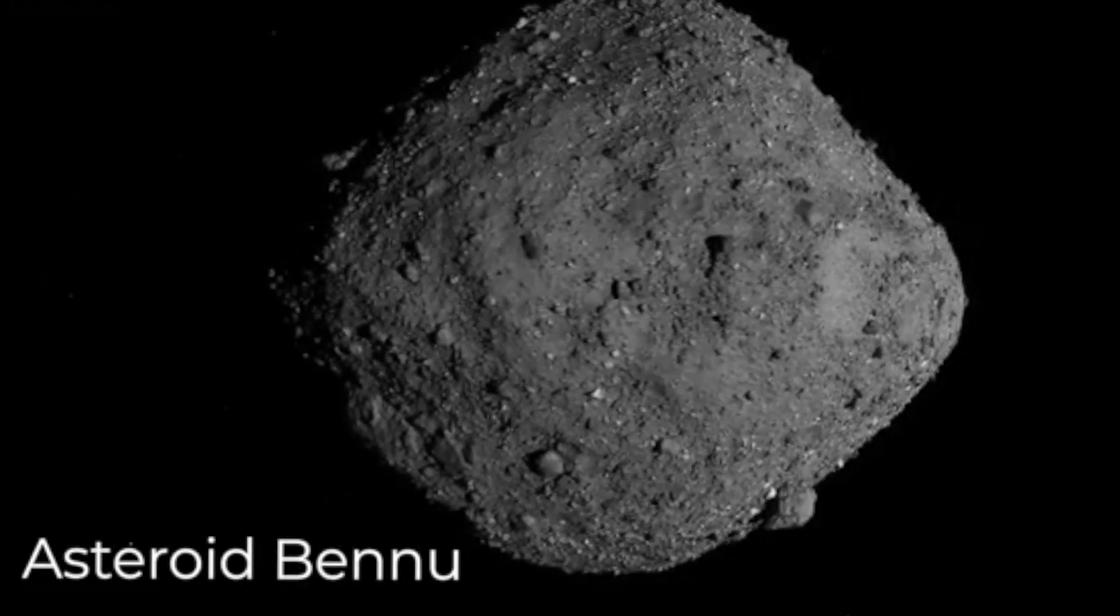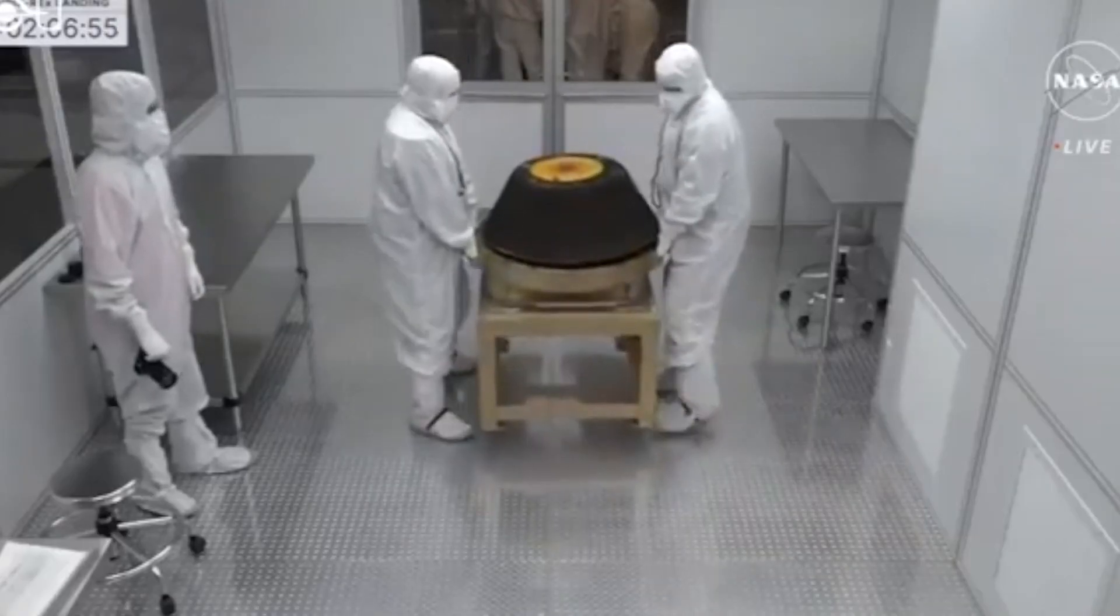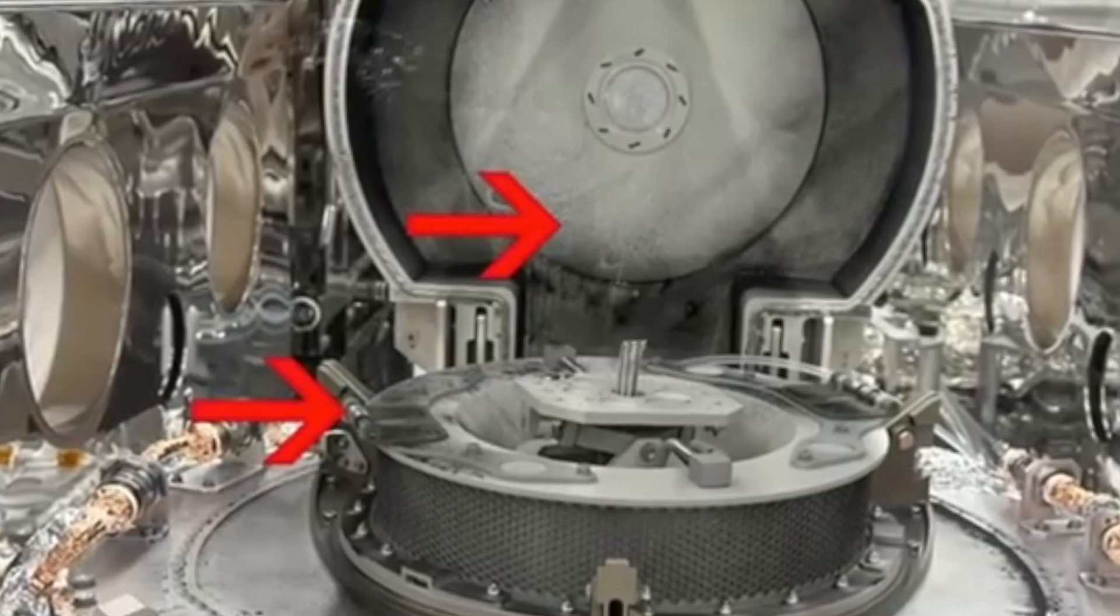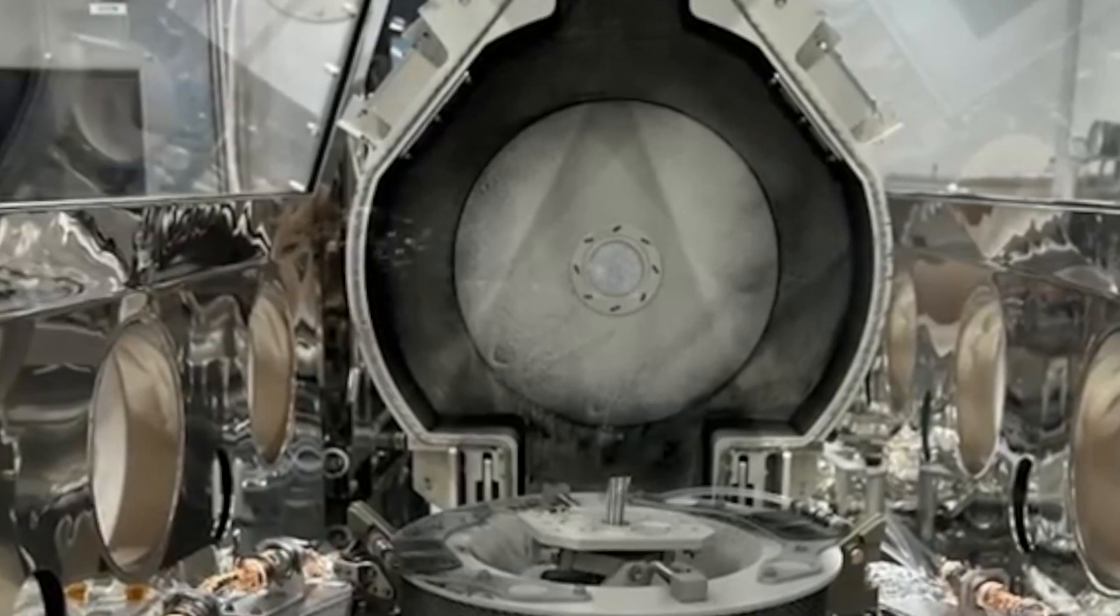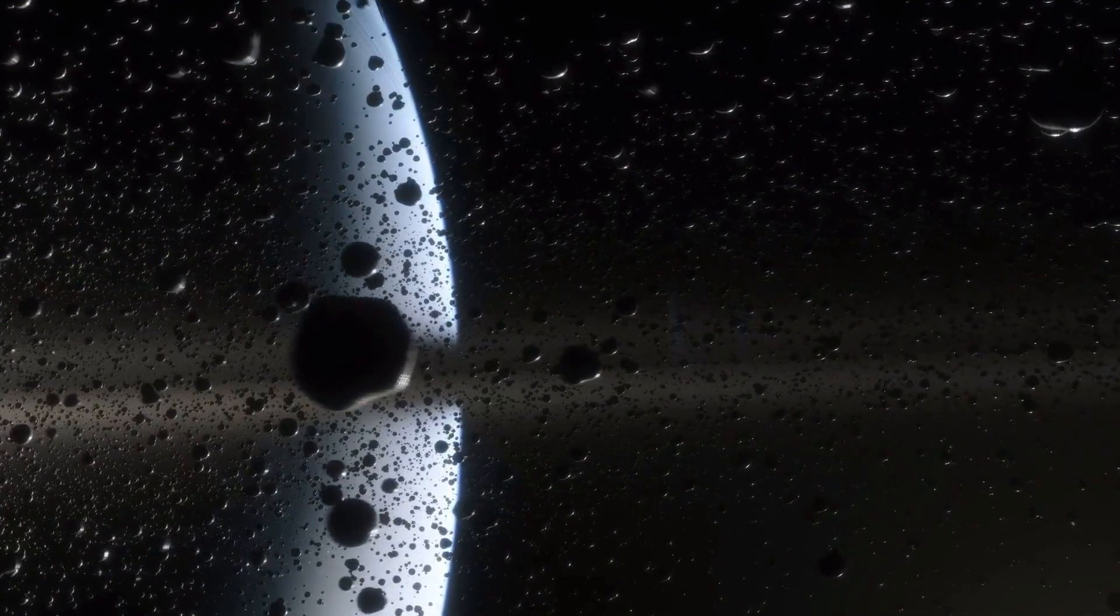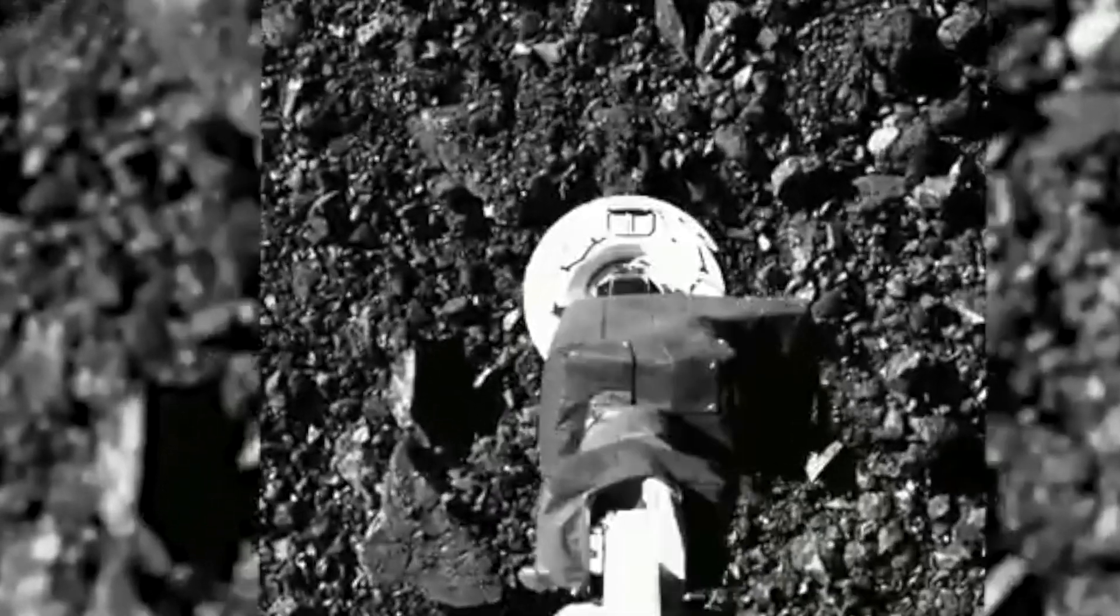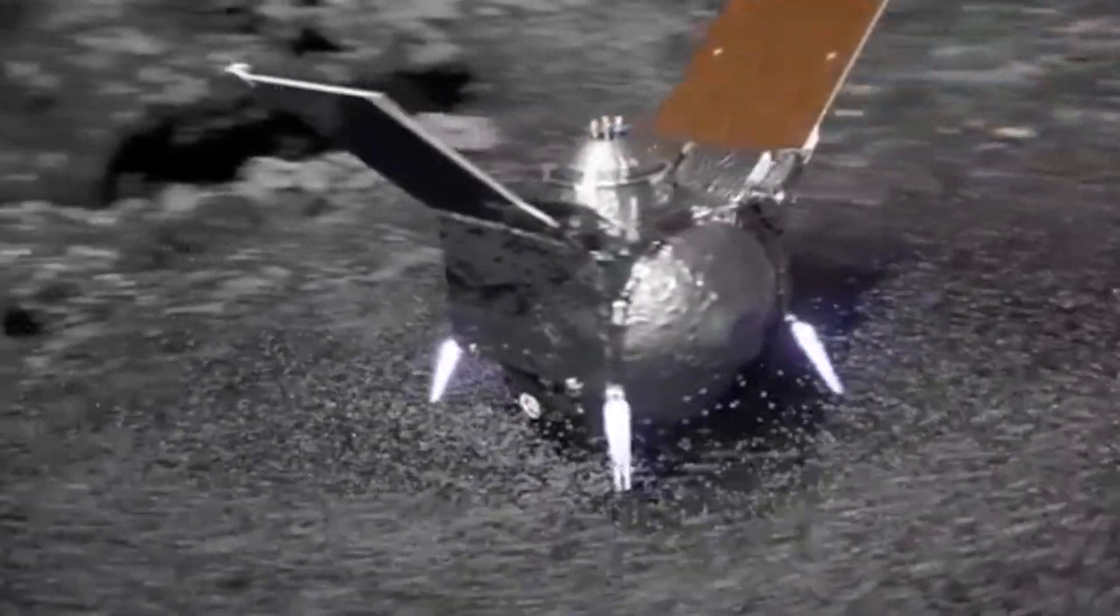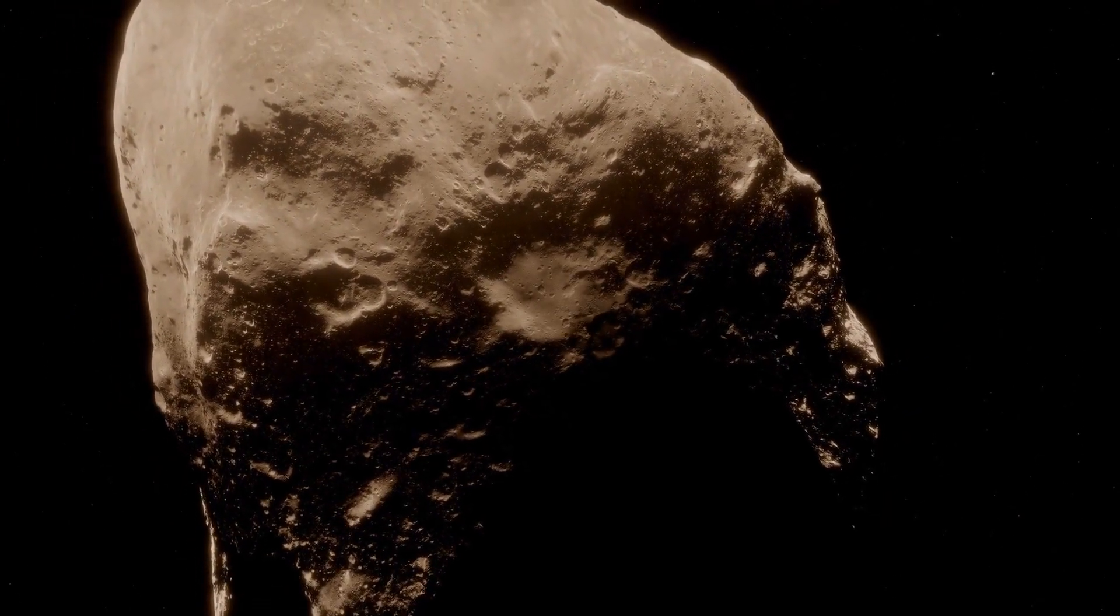As the lid of the canister was raised, the scientists were met with a surprising sight, a layer of black dust and debris covering the avionics deck of the canister. What made this even more unexpected was the fact that the sample had been safely stored in a sealed container throughout its journey. This discovery raised several questions. How did this dust accumulate, and what was its source? Additionally, what secrets might be uncovered in the detailed analysis of this historic asteroid sample?